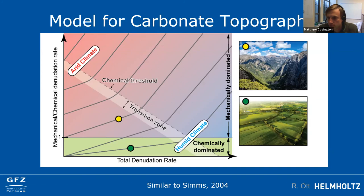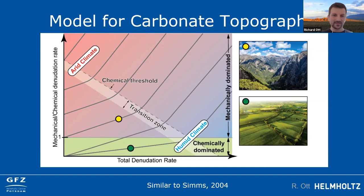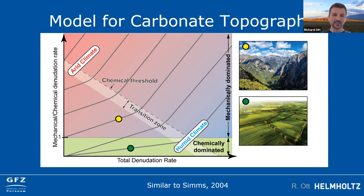A question from Mitya: what is the ratio of chemical to mechanical denudation in colder climates with less precipitation? In cold, dry climates, less precipitation means less runoff for chemical weathering, and less vegetation means fewer acids for dissolution, so I would assume a substantial amount of mechanical erosion relative to chemical weathering. But we haven't looked at data from such a region.